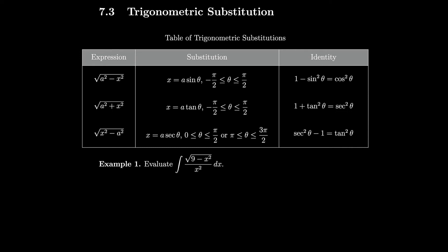Section 7.3: trigonometric substitution. The idea here is that if we have a square root as part of our integrand and we want to do the integral, it would be good to get rid of the square root because they're kind of a pain to deal with. So if we have the square root of a squared, we know it's easy — that's just the absolute value of a, and if a is positive, that's just a.